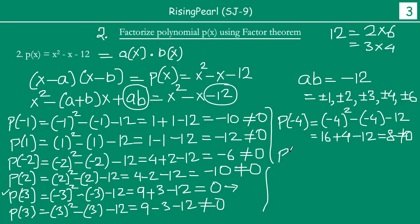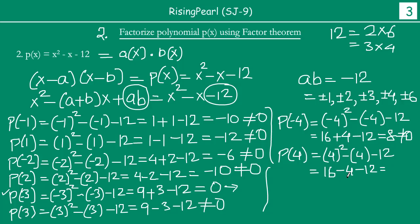Now let us try p(4). We get 4 squared minus 4 minus 12, which is 16 minus 4 minus 12. So 16 minus 4 is 12, and 12 minus 12 is 0. We found our second value for which p(a) equals 0. So the two factors of this polynomial are found.